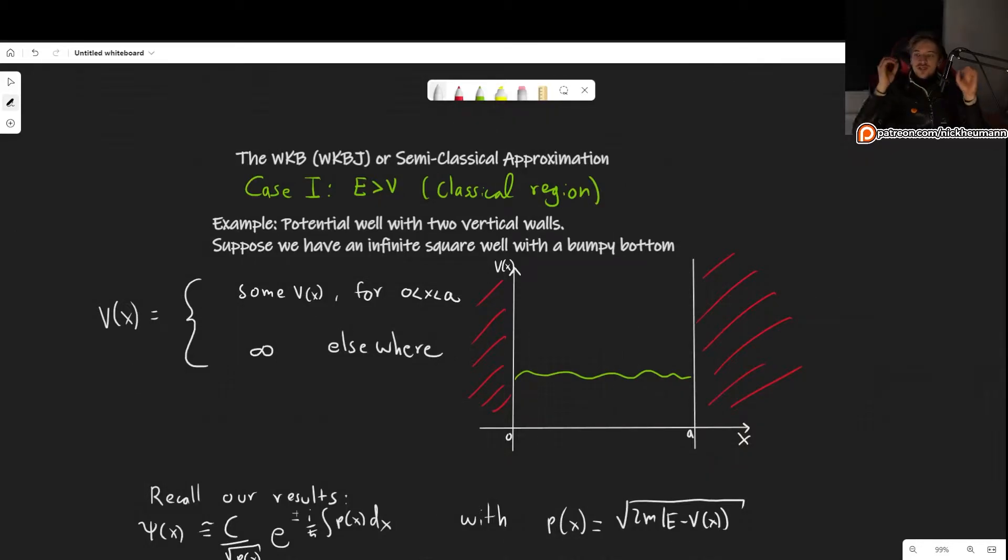Welcome! In this video we will continue working with the WKB or semi-classical approximation and in particular we will deal with the case where the energy is greater than the potential, which is what we call the classical region.